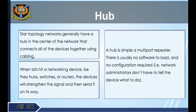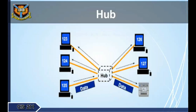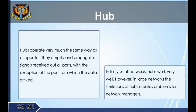Star topology networks generally have a hub in the center that connects all devices together using cabling. When data hits a networking device — whether hubs, switches, or routers — the device strengthens the signal and sends it on its way. A hub is simply a multi-port repeater with usually no software to load and no configuration required. Hubs operate like repeaters, amplifying and propagating signals out all ports except the port from which the data arrived. In fairly small networks, hubs work very well; however, in large networks, the limitations of hubs create problems for network managers.